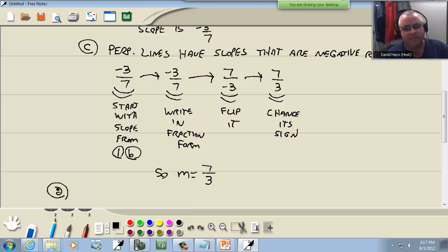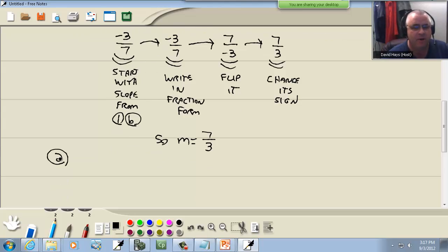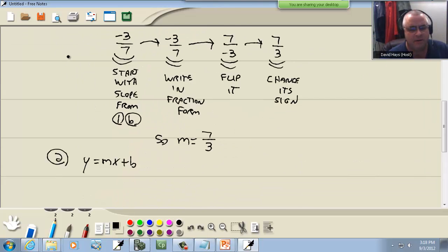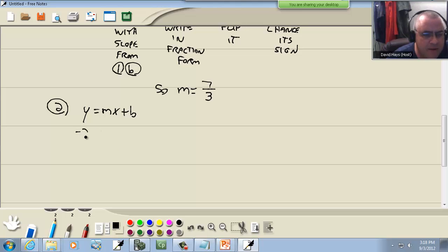Step 2 is still the same: we want to plug in the given point for X and Y and plug in the M we just found into Y equals MX plus B and solve for B. I don't remember what X and Y were, so I'm going to go up here to the given point. That's my X and that's my Y. So negative 2 for the Y, and M was 7/3, and X was 3 also, plus B.